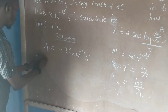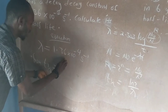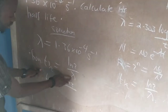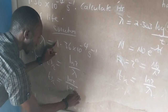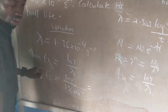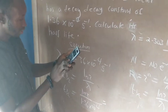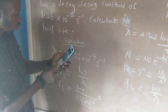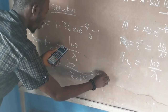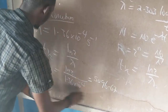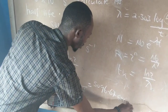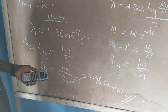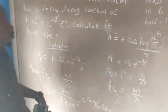We recall: half life equals ln 2 divided by lambda, the decay constant. So T½ equals ln 2 divided by 1.36 times 10 to the power minus 4. Calculating this gives 5096.67. Since the time is in seconds, the half life is 5096.67 seconds. This is the answer to the first example.